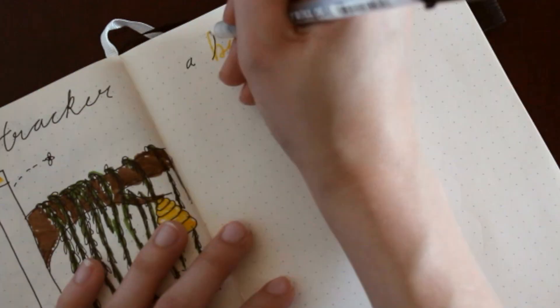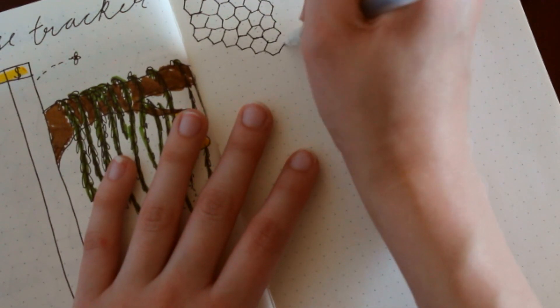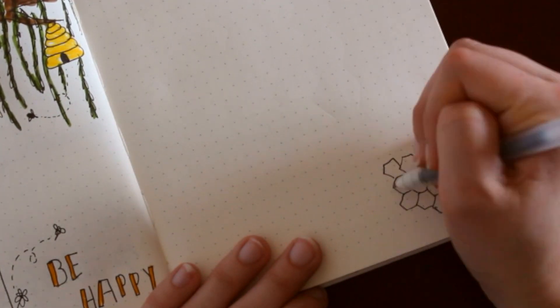And then on the right side of the page, I put a bumblebee's to-do. This is where I keep my to-do list. I draw a little bit of honeycombs, and it's a pretty simple spread until I fill it out later.